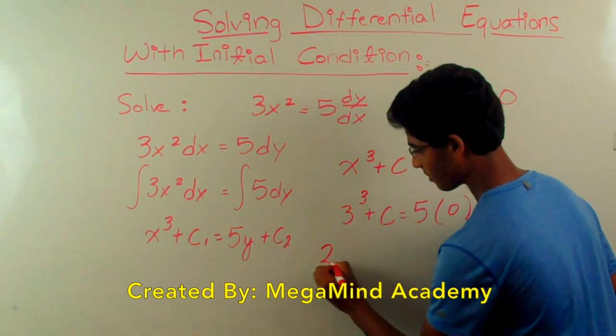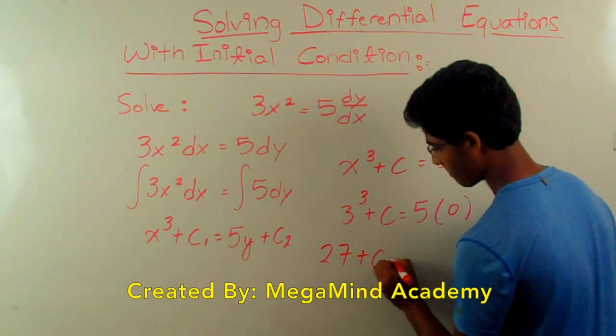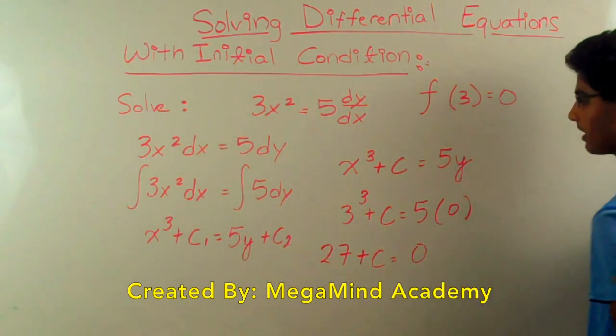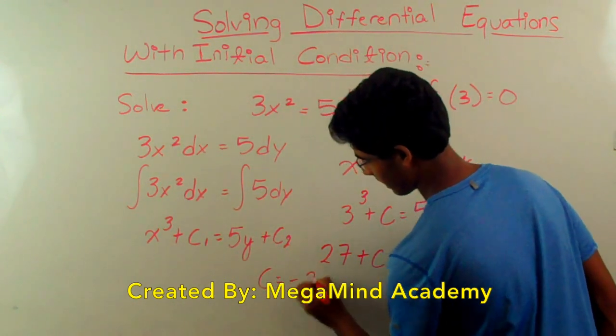So we get that 27, 3 cubed is 27, plus c is equal to 0. And that gives us that c is equal to negative 27.